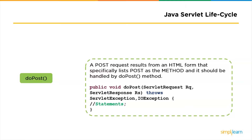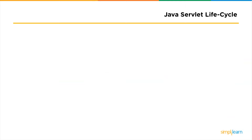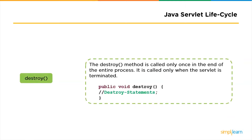Finally, we arrive at the last method, which is the destroy method. The destroy method is called only once at the end of the lifecycle of a servlet. This method gives your servlet a chance to close database connections, halt background threads, write cookie lists or hit counts to the disk, and perform other clean-up activities. With this we finish up the lifecycle of a servlet.